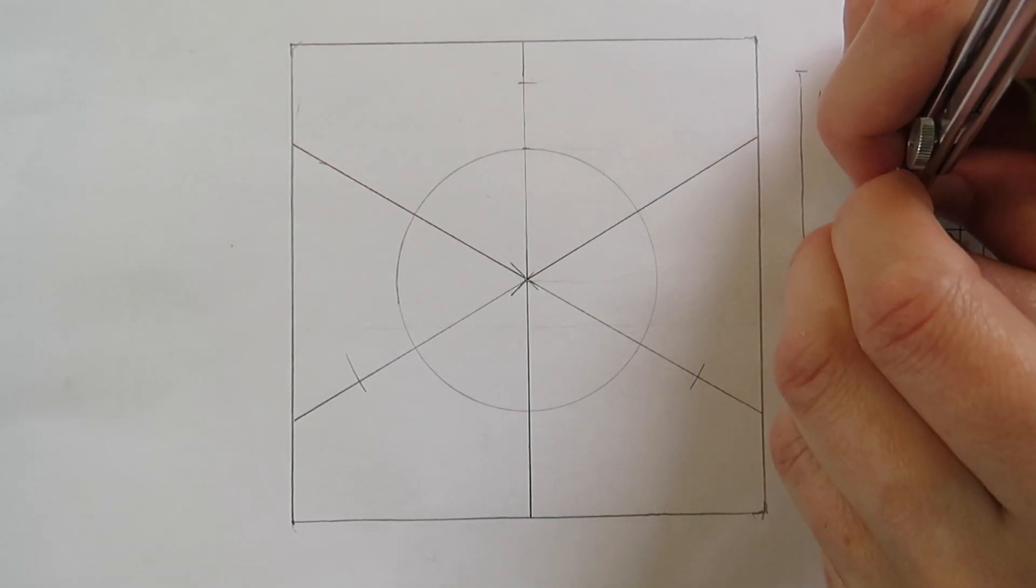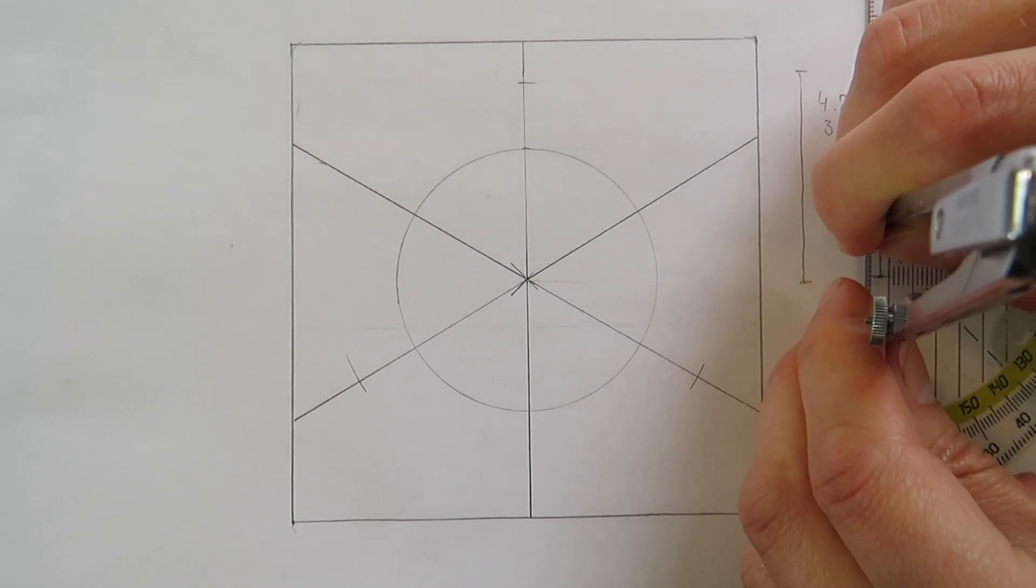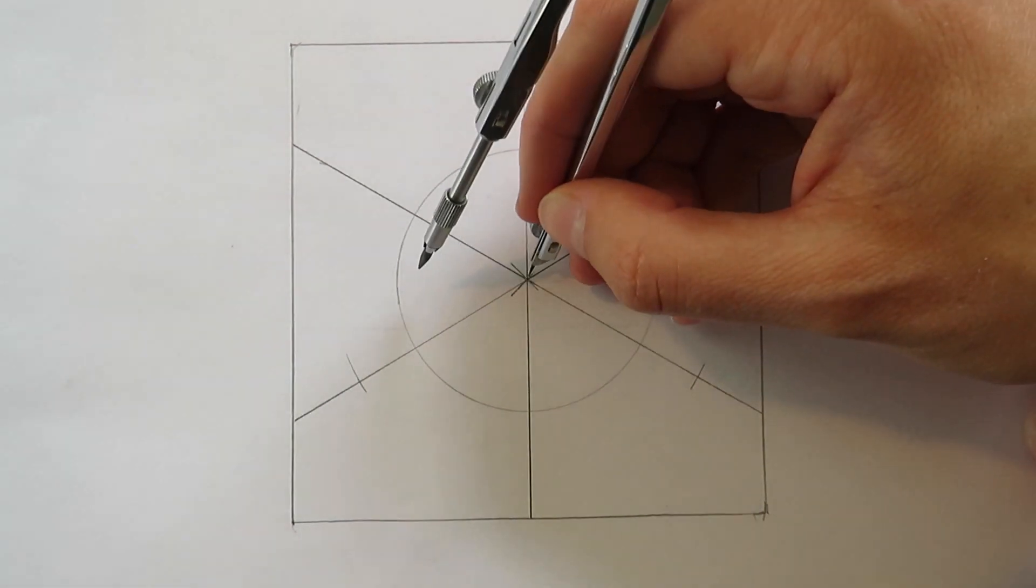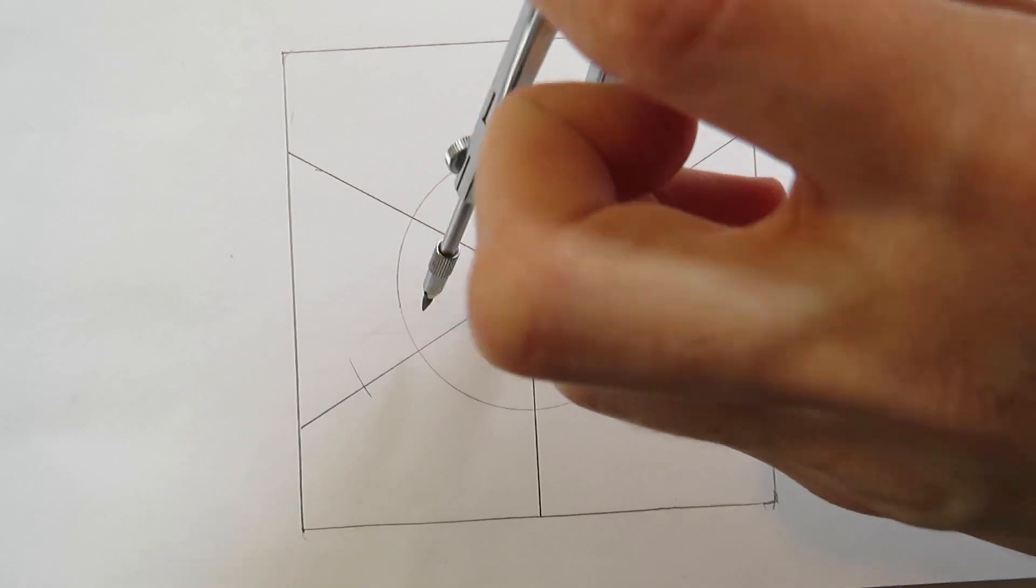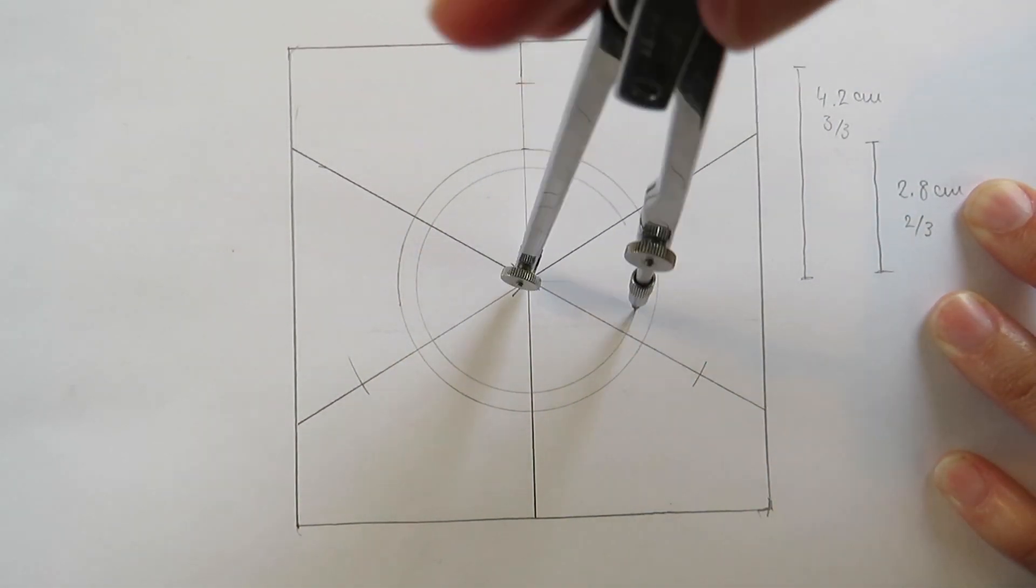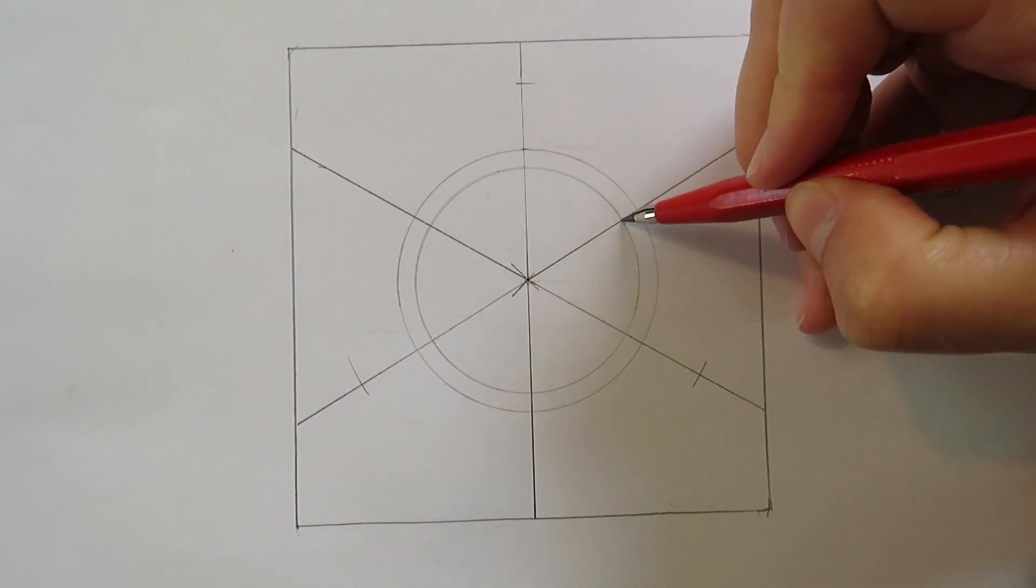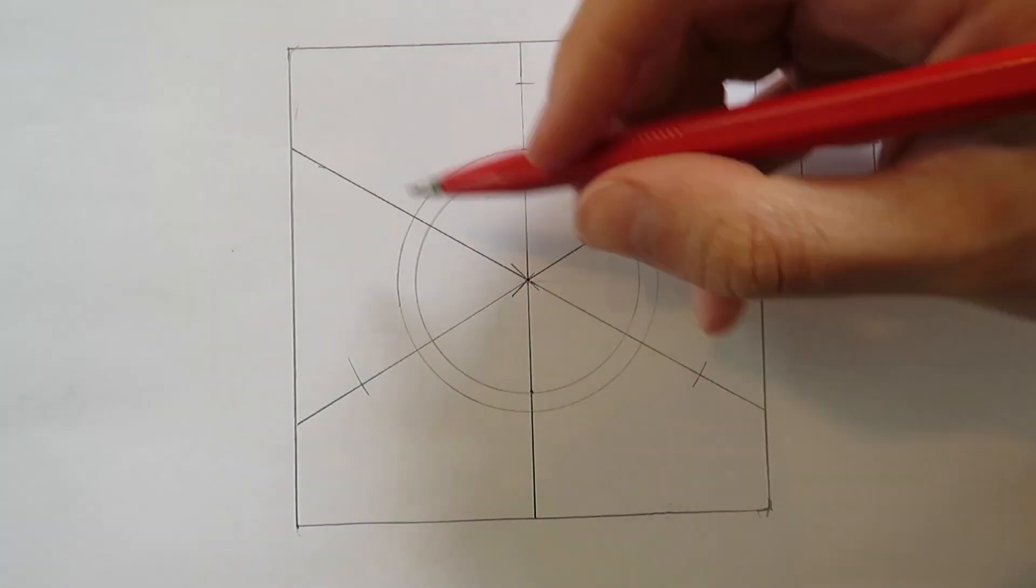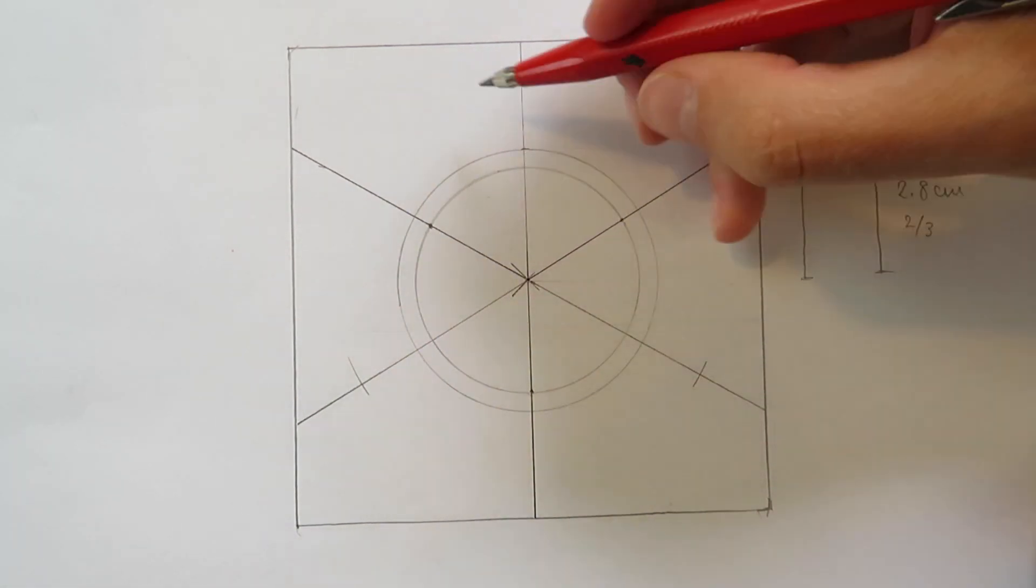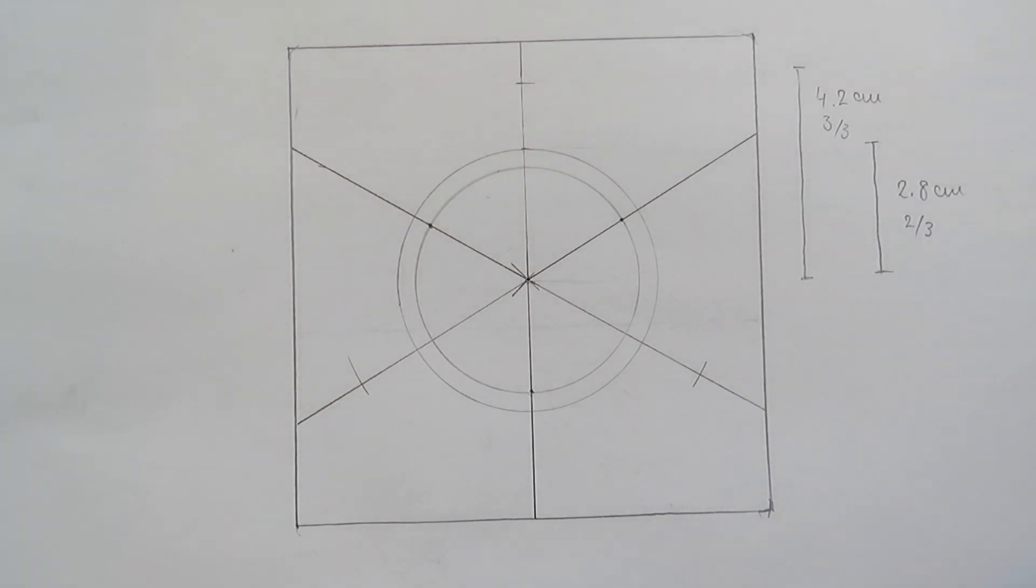Now we have to determine the thickness of the triquetra. I go for 4 millimeters—I think that's a good size. So we draw a second smaller circle with radius 2.4 centimeters, because we subtract 4 millimeters from the radius of the bigger circle.